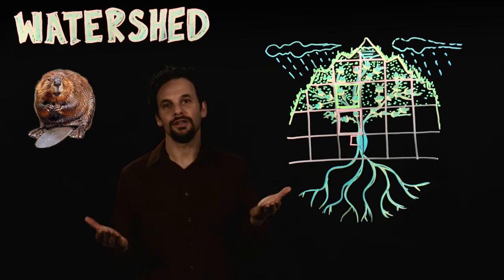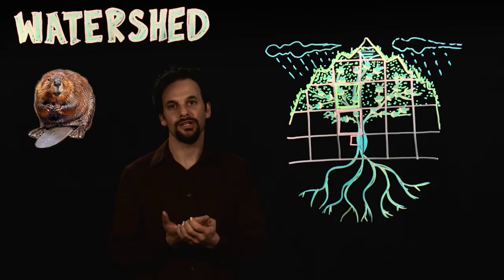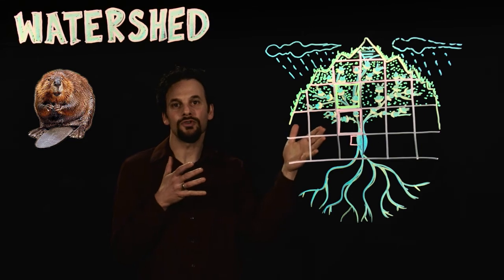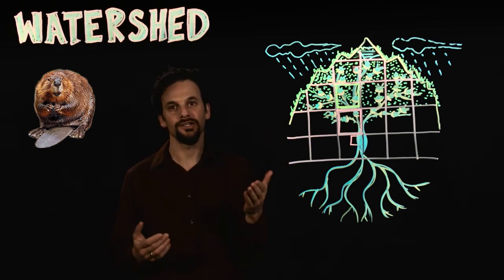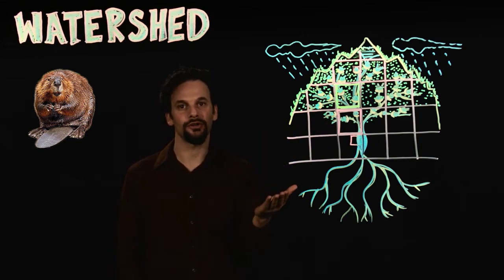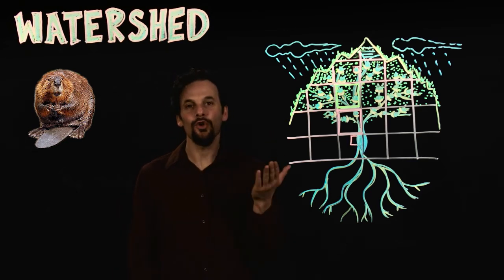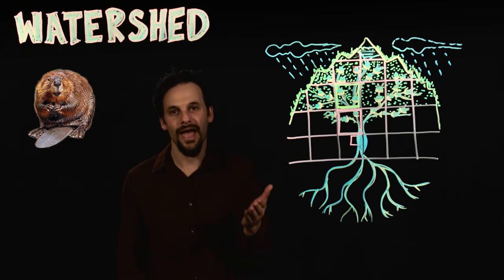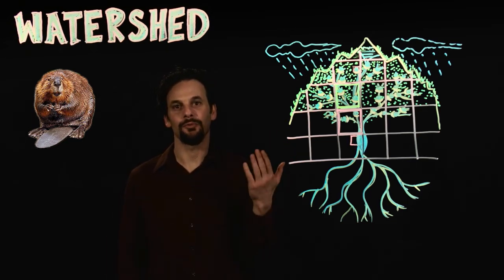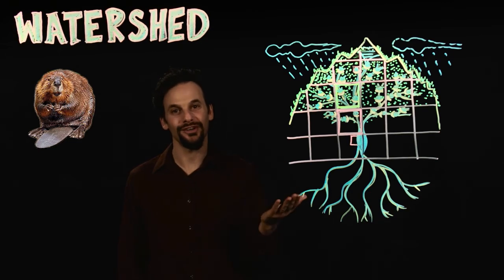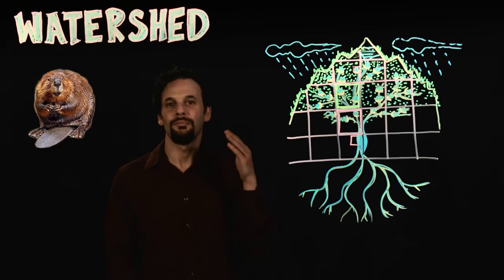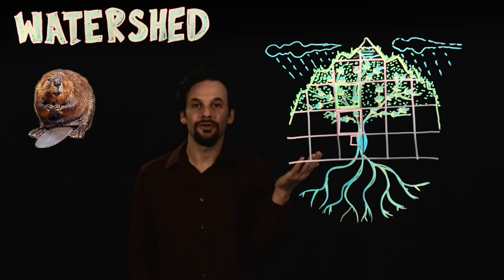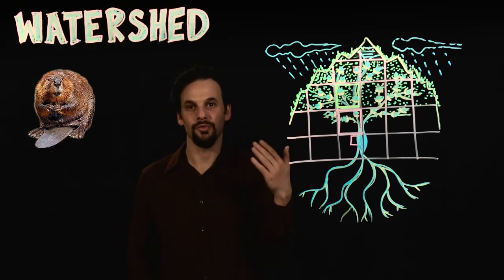That's what the watershed looked like when European colonization happened and as Europeans moved across this continent. They hunted and trapped the beaver at every turn. There were so many beaver in every valley across this continent their pelts were actually used as currency. But when the beaver were removed the watershed and ecosystem were never the same.